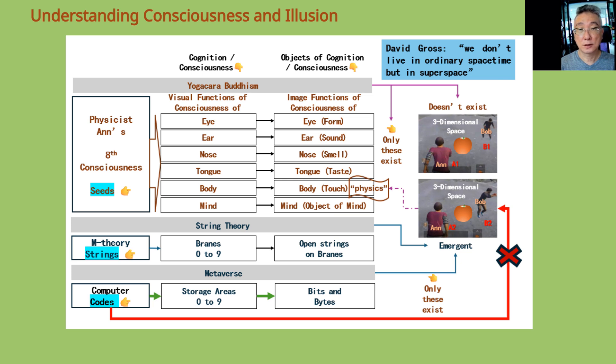String theorists and physicists are very intelligent people, but very few have the wisdom of Gross. Objects in three-dimensional space not only do not exist, it is impossible to exist. As in the case of a metaverse, there is no way the metaverse computer can interact with the apple through the red line.